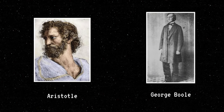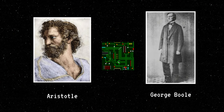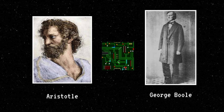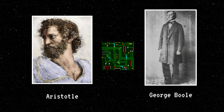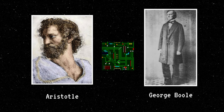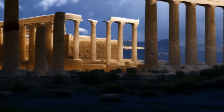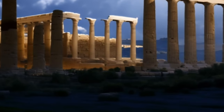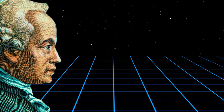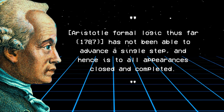Boole was commonly known as a mathematician, but he also considered himself a philosopher continuing Aristotle's legacy, who was widely regarded as having exhausted the subject of logic in his writings. The great philosopher Immanuel Kant commented that, since Aristotle, logic had been unable to take a single step forward, and therefore seems to all appearance to be finished and complete.